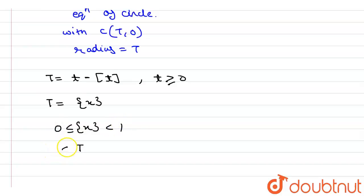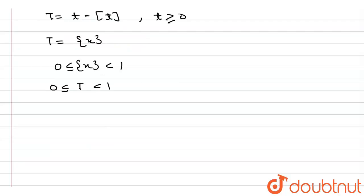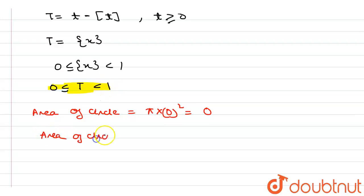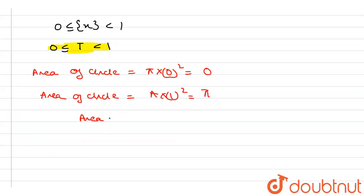We know that the fractional part of t lies between 0 and 1, so t lies in [0, 1). Therefore the radius lies between 0 and 1. The area of the circle when t equals 0 is π times 0 squared, which is 0, and when t approaches 1 the area approaches π times 1 squared, which is π. So the area of S lies in [0, π), since 1 is not included, π is not included.